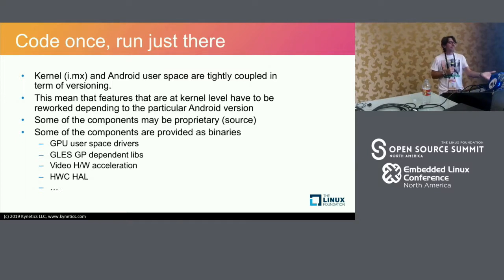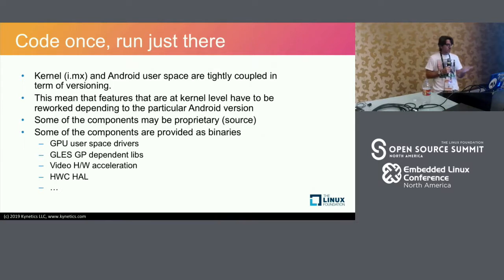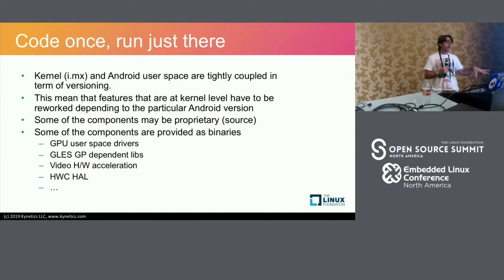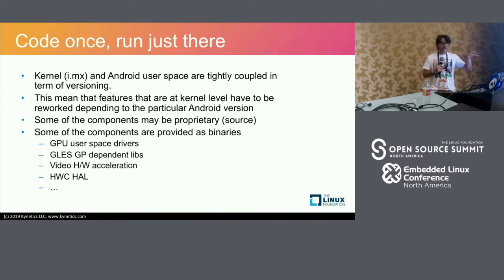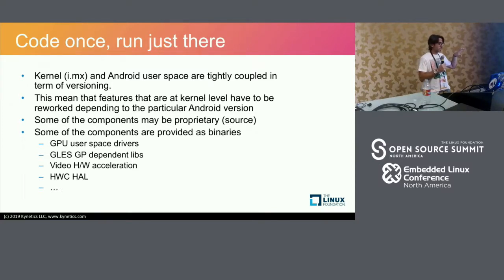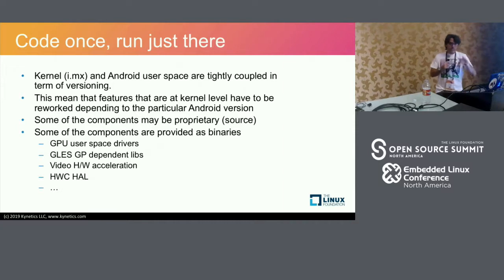These are typical examples of things that are really closed: the GPU, hardware acceleration, hardware composer abstraction layer, OpenGL libraries — all GPU-dependent, of course.